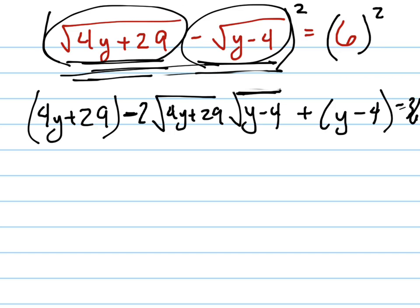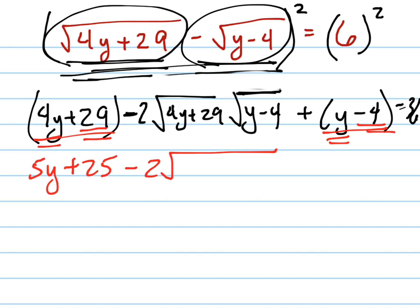I ran out of room over there. All right, so we're not done yet. So now we're going to add like terms. Notice that I've got y and 4y here, so that becomes 5y. I have 29 and minus 4, so that's positive 25 minus 2 square root of.